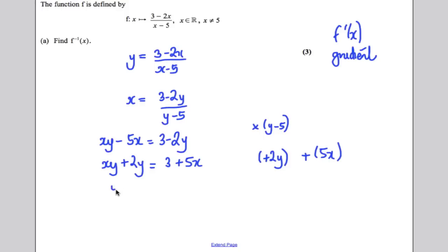Then we can factorise the y here. y times x plus 2 is equal to 3 plus 5x. And then we can divide both sides by the x plus 2 and we would get y is equal to 3 plus 5x over x plus 2. So writing that in the correct form, f to the minus 1 of x is therefore 3 plus 5x divided by x plus 2. And that's it, we're done for 3 marks.